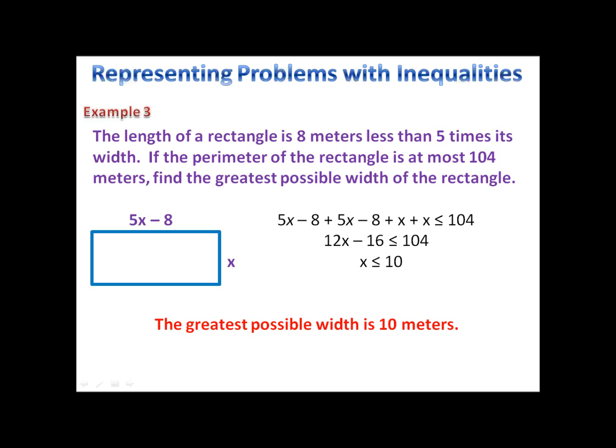5x minus 8 is the length of the rectangle. X is the width. We have the perimeter where we add 5x minus 8, 5x minus 8, x and x. And that has to be less than or equal to 104. At most means less than or equal to. We'll combine our like terms and then solve the inequality. X is less than or equal to 10. So the greatest possible width is 10 meters. If I take any width that is 10 meters or less, I will get a perimeter that is 104 or less. If you picked a number bigger than 10, the perimeter will be more than 104 and it would no longer work.